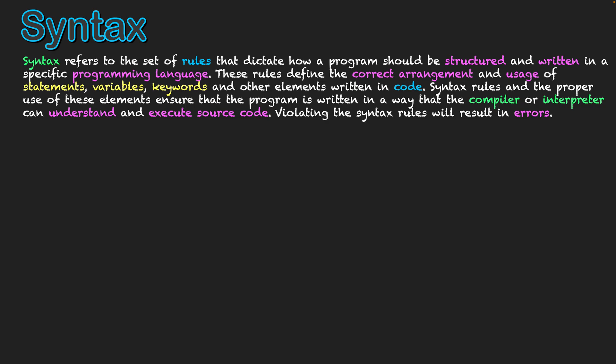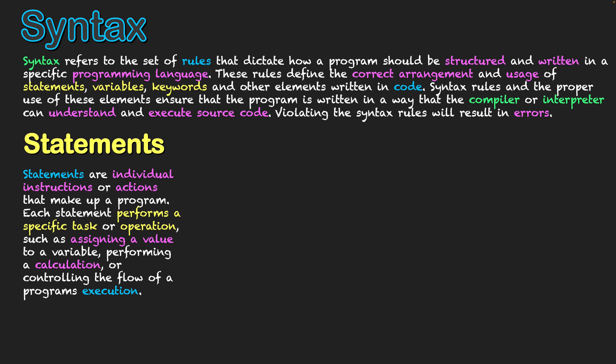Let's look at these three areas of statements, variables, and keywords, and we'll start off with statements. Statements are individual instructions or actions that make up a program. The lines of code we write out that are executing different functions are all created from statements. Each statement performs a specific task or operation, such as assigning a value to a variable, performing a calculation, or controlling the flow of a program's execution.